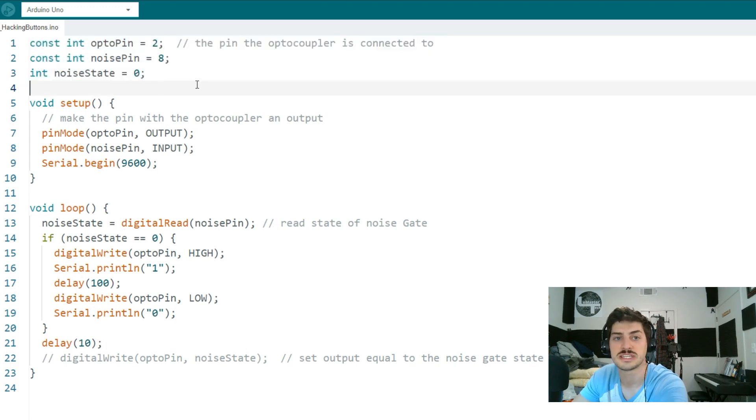The only three variables we need to set up in the beginning are whatever pin we're using to control the octocoupler, and for me that's going to be pin 2. Whatever pin we are listening to the microphone input from, and that's going to be pin 8 for my build. Then I'm just creating an interval to track the state of our push button, so whether it should be on or off, noise state.